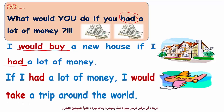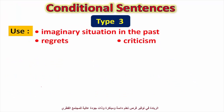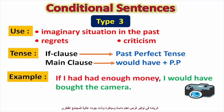In type three, you use it when you speak about an imaginary situation in the past — regrets or criticism. The tense in the if clause is past perfect, and in the main clause it's would have plus past participle. Example: 'If I had had enough money, I would have bought the camera.' Now let's do some exercises.